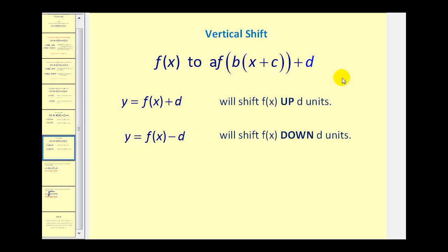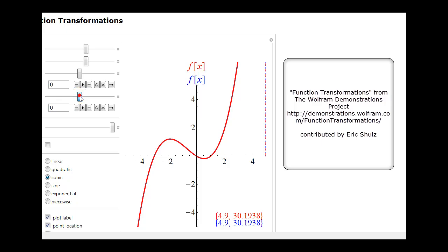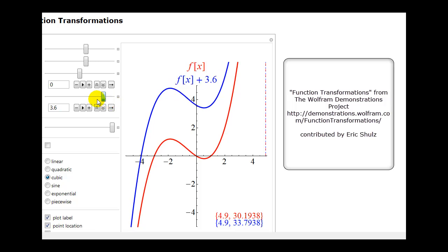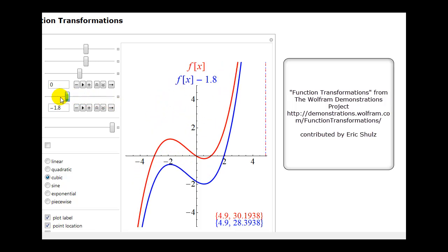Lastly we have d. If we have y equals f of x plus d, this will shift the function up d units. And if we have y equals f of x minus d, this will shift the function down d units. Remember f of x is equal to y, so this is adding or subtracting values to the y-coordinates. If we have f of x plus d the function is shifted up d units, and if we have f of x minus d the function is shifted down d units.